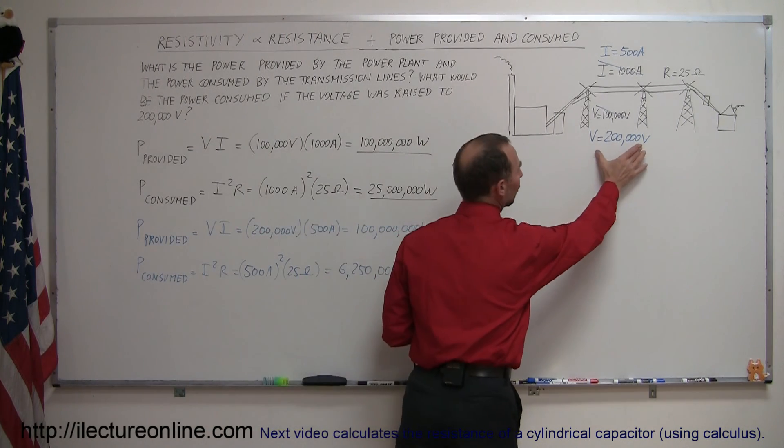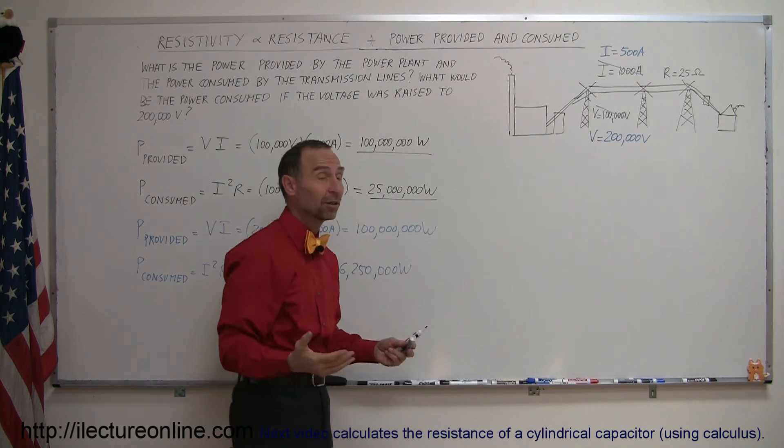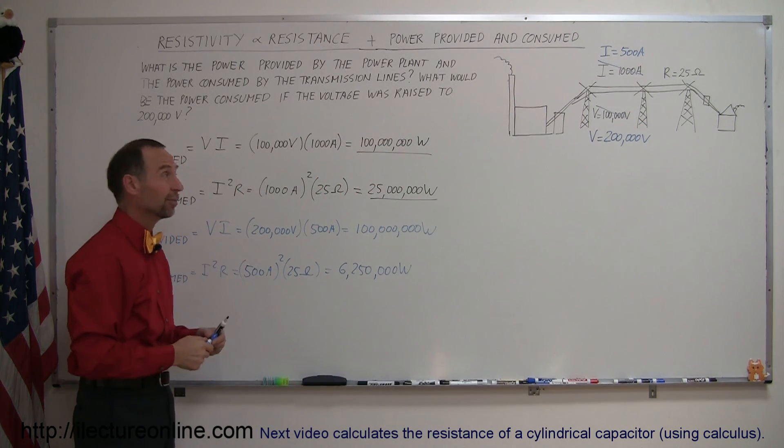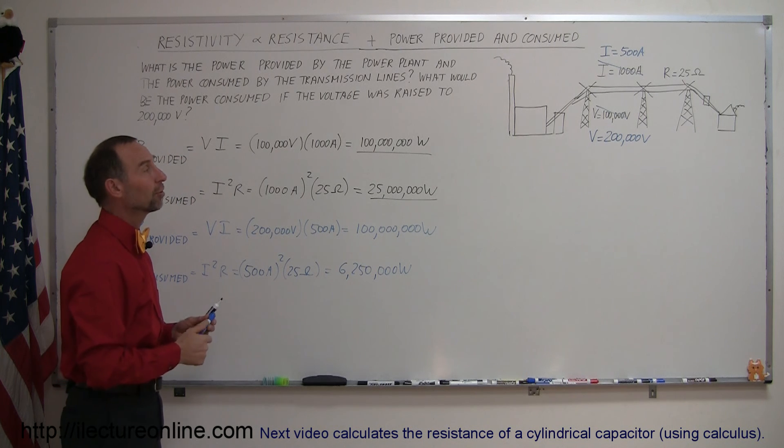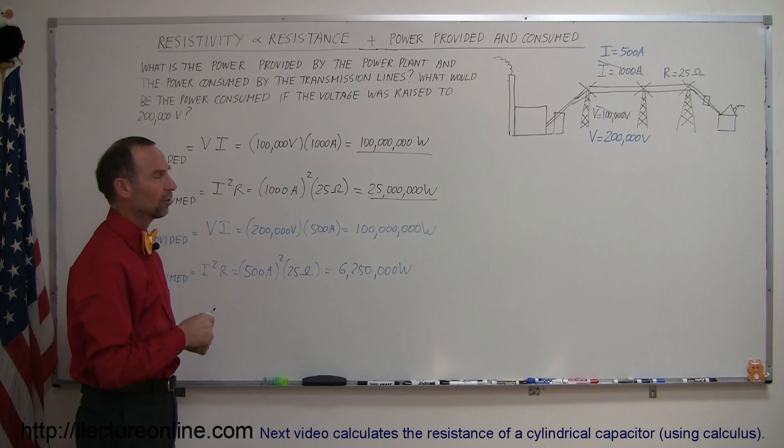So what they do is they typically raise the voltage across transmission lines to a half million volts or 750,000 volts, and maybe even a million volts, so that less and less power would be consumed on the transmission lines.